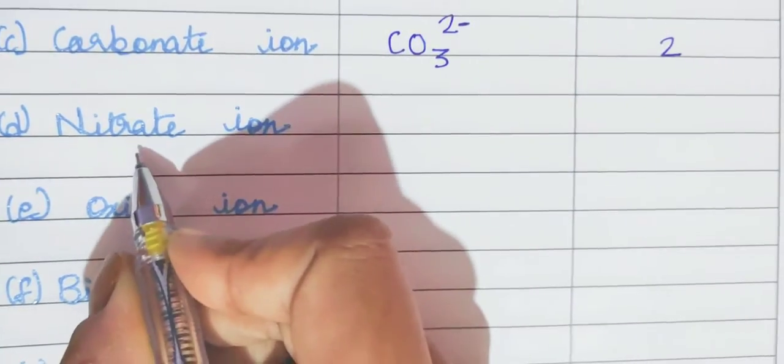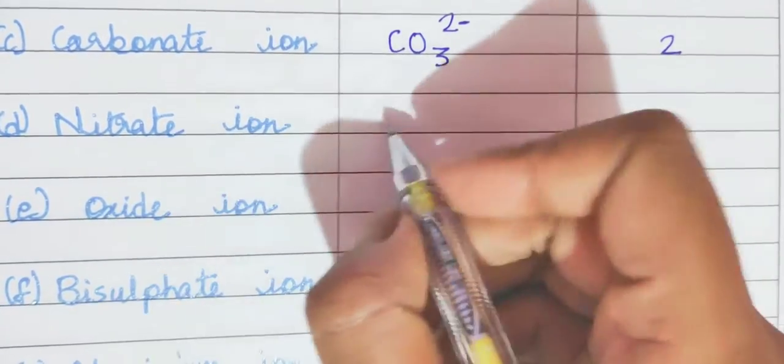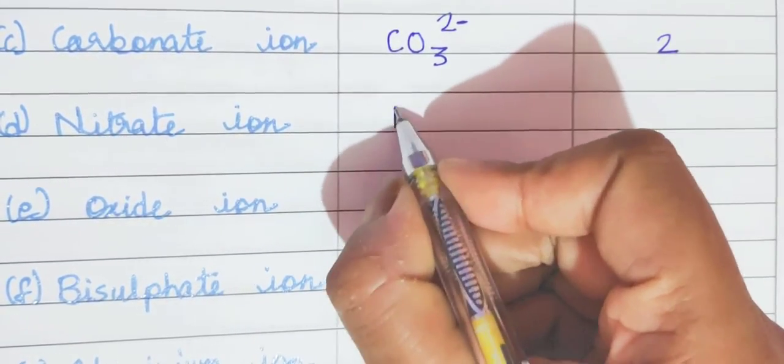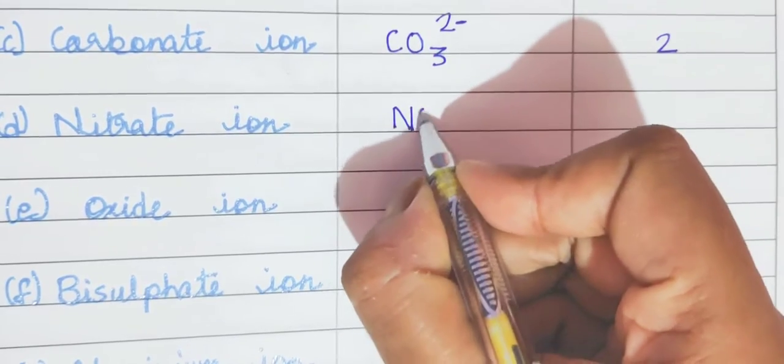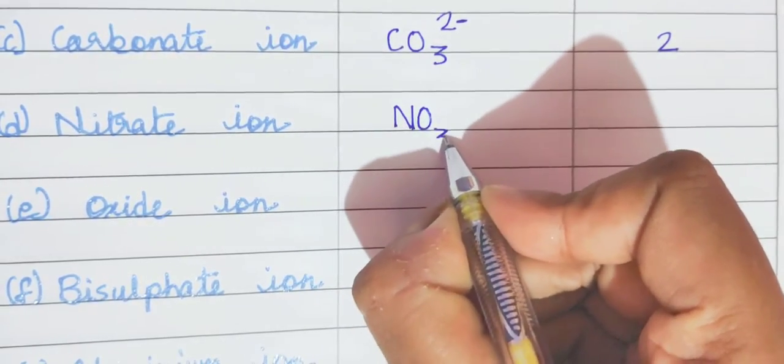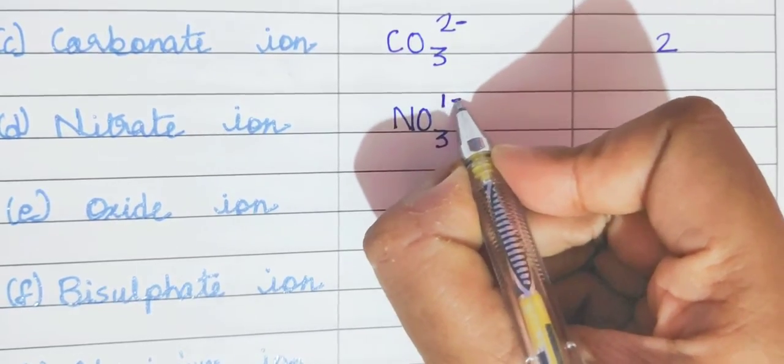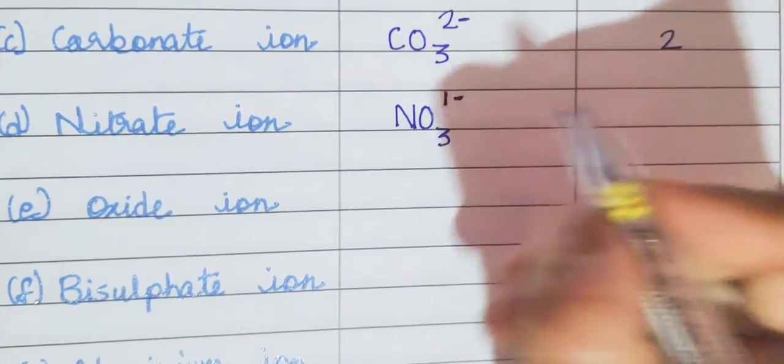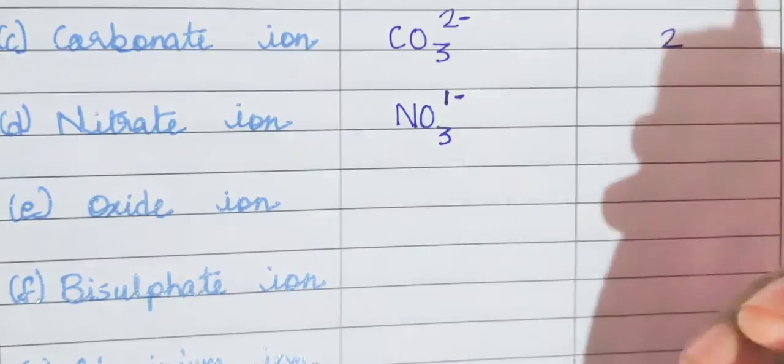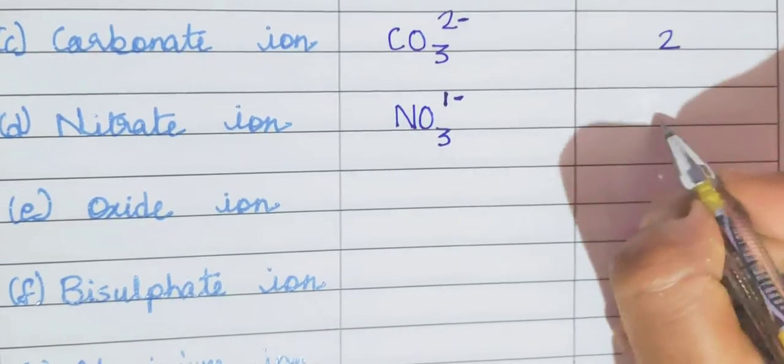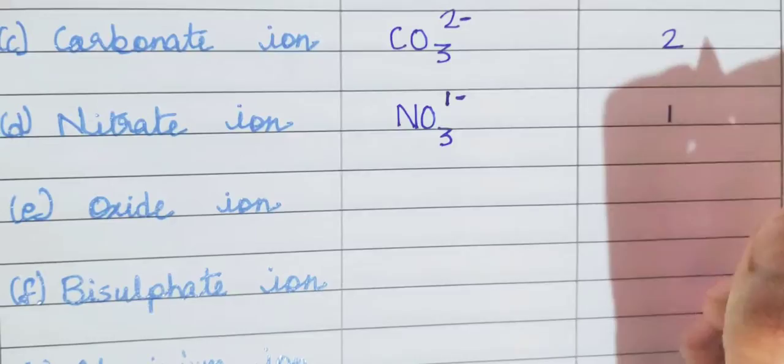Then comes nitrate ion. It is also a radical. So the formula is NO3. And its valency is 1 minus. Now 1 we cannot write also. 1 is negligible. We can simply write minus. So valency is 1.